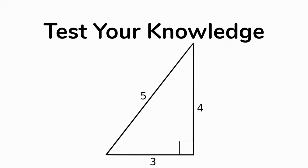Let's classify this one. The numbers tell you how long each side is. This is a scalene triangle because all the sides are different — one side is 3, one is 4, one is 5. And it has that box in the corner, which is the symbol for a right angle. So this is a scalene right triangle.